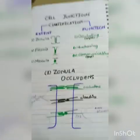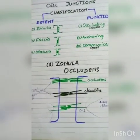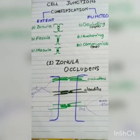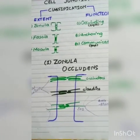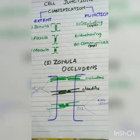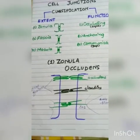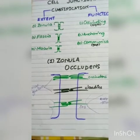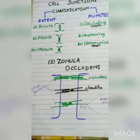Now let's talk about the specific types of junctions. First, zonula occludens. Zonula occludens is of the zonula type, meaning the entire cell membrane perimeter is involved and it blocks the intercellular space. The transmembrane proteins involved are called claudins and occludins.